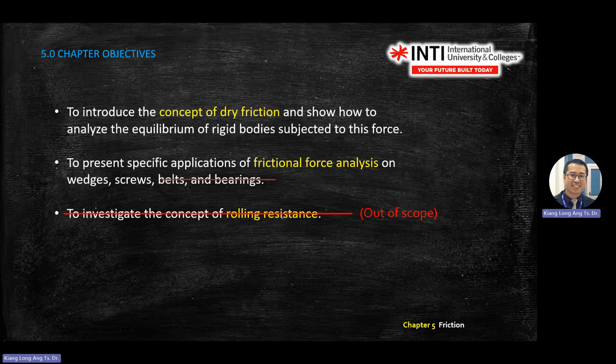If we have time, we may go back in week 13 or 14 just to give you some information. For friction analysis, we will only cover wedges and screws — wedges are the triangular things you put against a door to stop it. Screws involve turning clockwise or anticlockwise to tighten. We won't cover belt or bearing in this module.